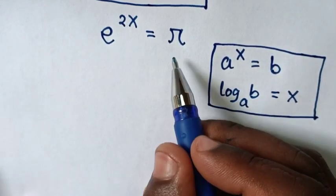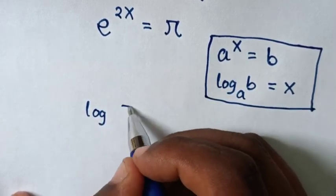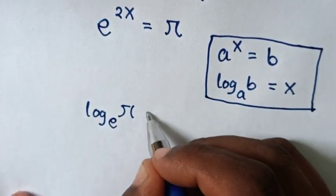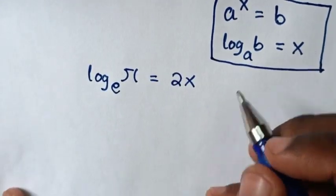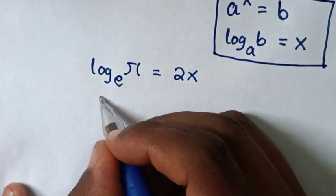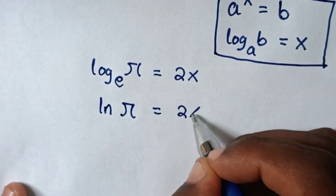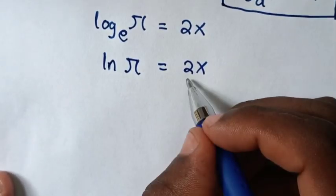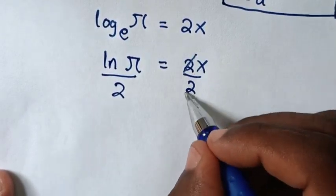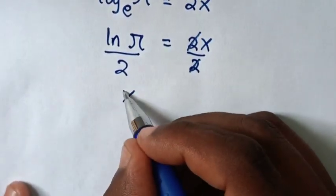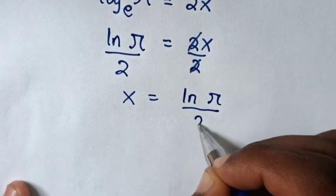Then in this equation, when you apply logarithm, it will be log of pi, base e, is equal to 2x. Then log base e is the same as ln, so it will be ln(pi) is equal to 2x. Then in the next step, we divide by 2 on both sides, so the 2s will cancel. Therefore, x is equal to ln(pi) over 2.